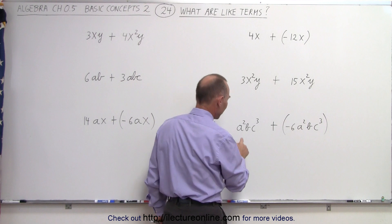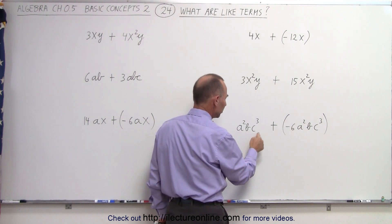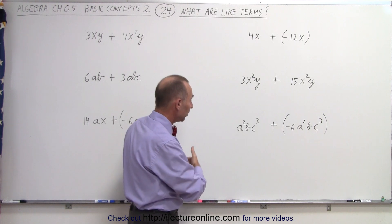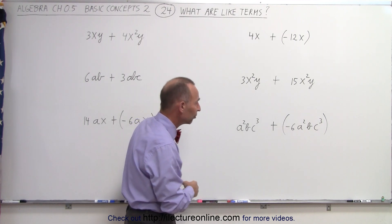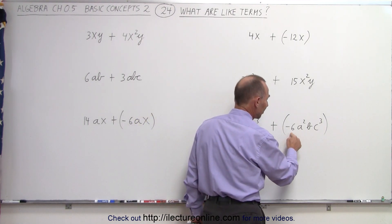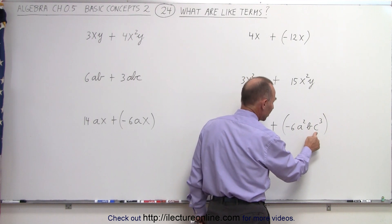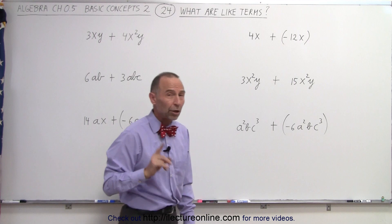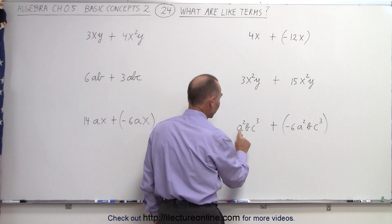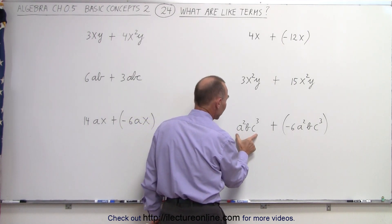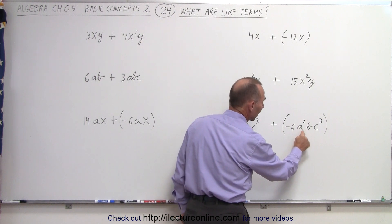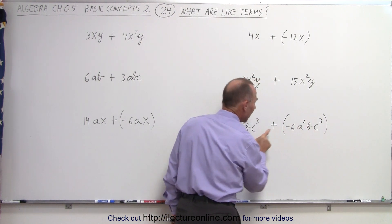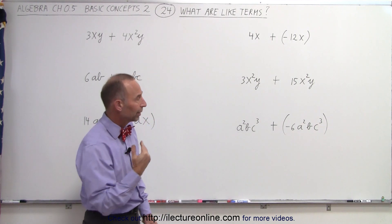Over here, notice we have a squared b c cubed — they're multiplied together, so these are called factors. a squared b and c cubed are factors. Here also, negative 6, a squared b, and c cubed are factors. Are these like terms? They are like terms because this has a squared b c cubed as a factor, and this also has a squared b c cubed as a factor. Since the letter portions are exactly the same, we can call them like terms.